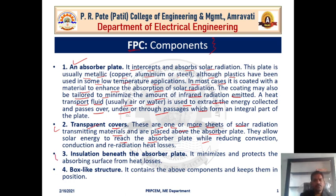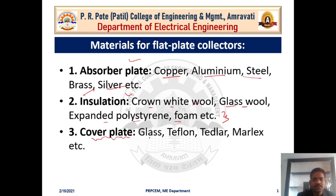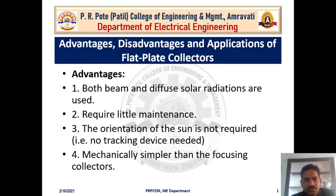A third component is the insulation beneath the absorber plate, which minimizes and protects the absorbing surface from heat loss. Then there is a box-like structure that contains all the above components and keeps them in position. Insulation materials include rock wool, glass wool, expanded polystyrene, or foam. The cover plate material is generally glass, Teflon, Tedlar, or Marlex — glass being most commonly used.